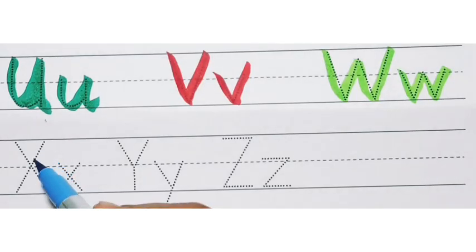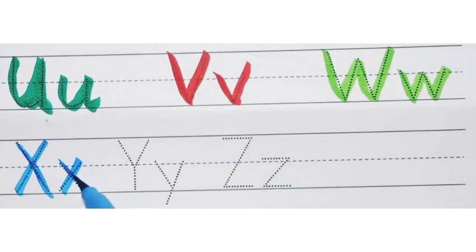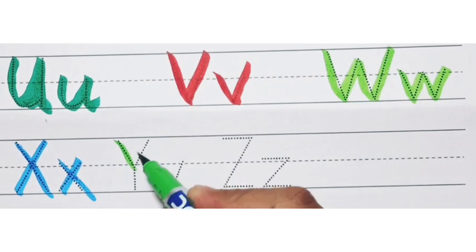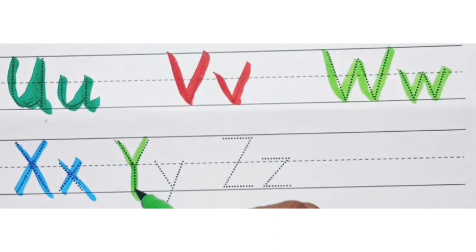Sky blue color. X, X, X for xylophone. Green color. Y, Y, Y for yarn.